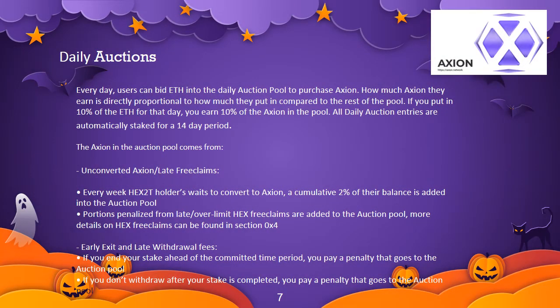The daily auction: putting tokens and value into your pocket. To get AXN, it needs to be claimed by HEX2T holders. The longer they wait to claim, the more penalties they face — about 2% of their total per week. This 2% is added into a daily auction pool where people can bid using ETH on the AXN tokens within it. If you bid 10% of the ETH on that day, you get 10% of the pool rewards. 80% of the ETH paid in the auction is then used to hyperdrive both the AXN token price and stakers' earnings — the ETH purchases tokens, boosting the token price, and those tokens are then distributed to stakers, creating a very strong positive feedback loop.